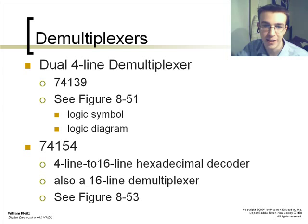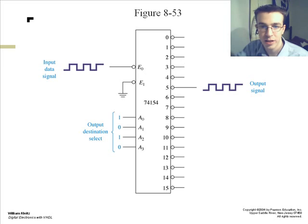A dual 4-line demultiplexer is available. This is 74151. The 74154 is another style, but it has four output destination selects and 16 output signals it can handle.